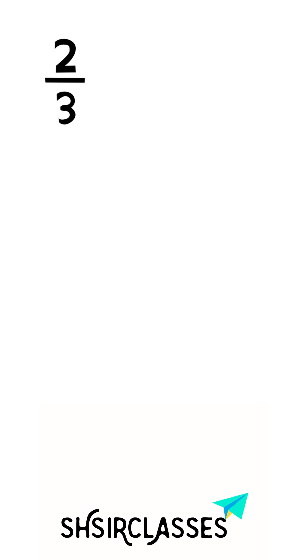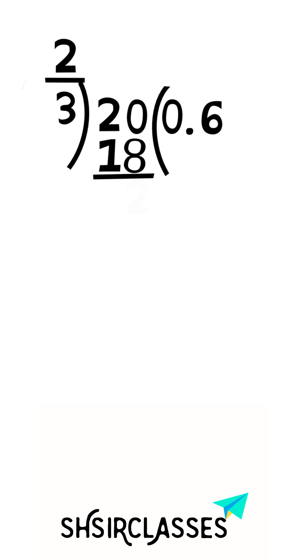to a decimal by using division. We're taking the decimal. For this decimal we can write here a zero. Next, 3×6=18. Subtracting 18 from 20, again we can write a zero for the decimal. 3×6=18, subtracting 18 from 20.